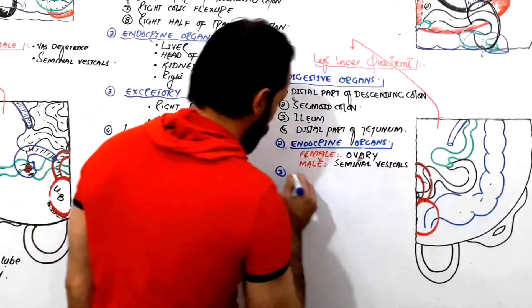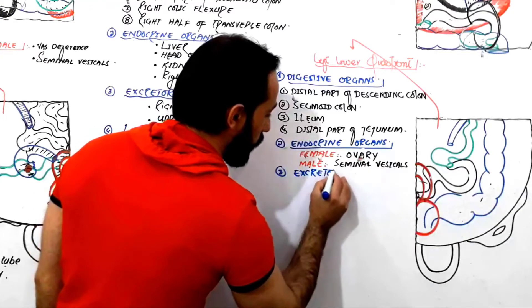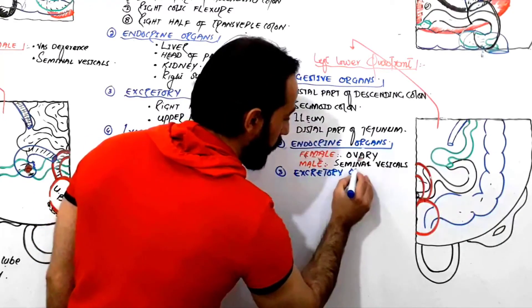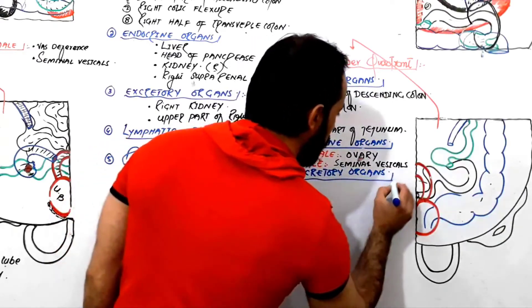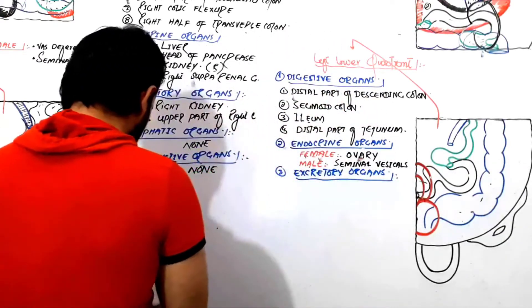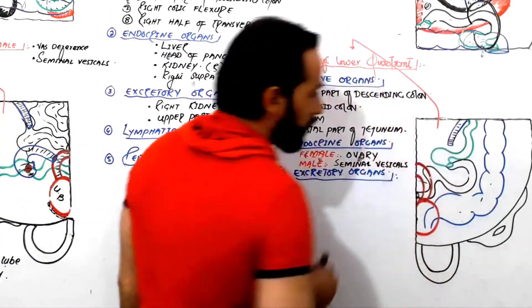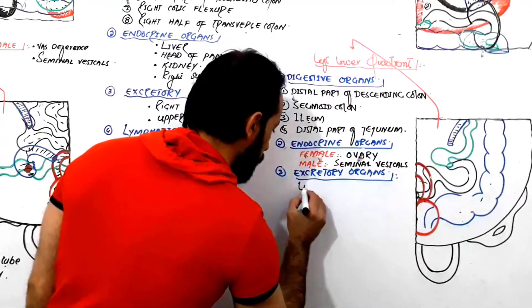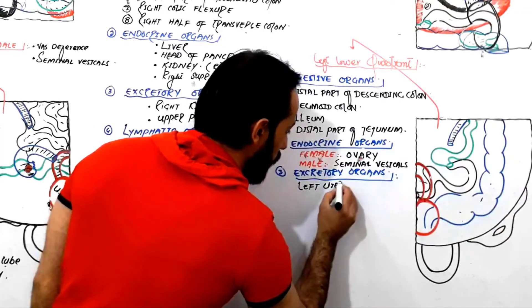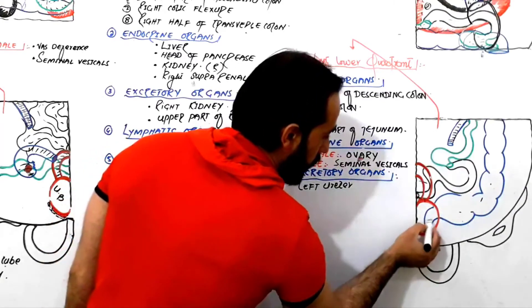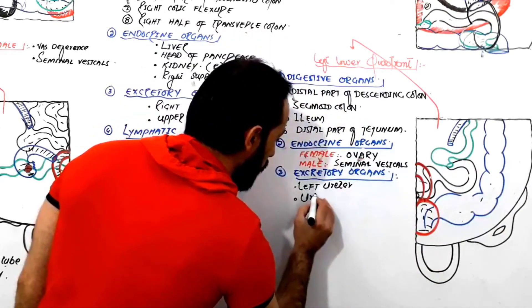The third group of organs found in the left lower quadrant are the excretory organs. Yes, we have excretory organs present there. The left ureter is found there, and you should not forget about the urinary bladder, which is also present.